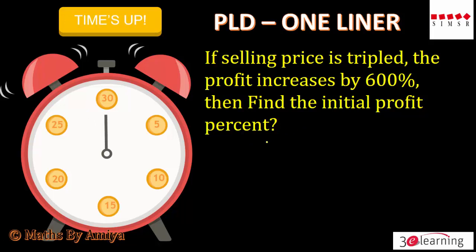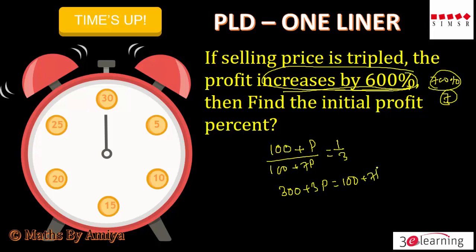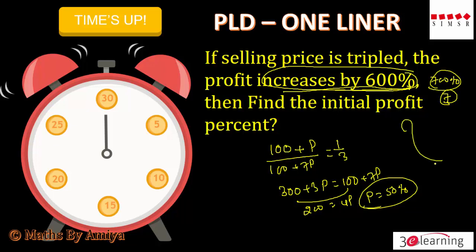Time up. Cost price is 100, profit is P. Profit increased by 600% means profit becomes 700% of original — that is 7 times — so new selling price is 100 plus 7P. Selling price triples means ratio is 1 to 3: 300 plus 3P equals 100 plus 7P. This gives 200 equals 4P, so P is nothing but 50%. This is all about the 30-second game. If you have any doubt, you can ping me on YouTube or Facebook. Thanks, bye bye, and happy learning!